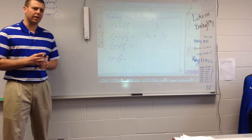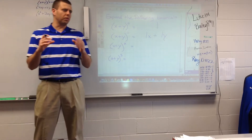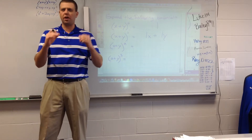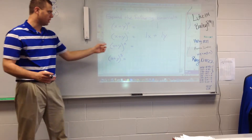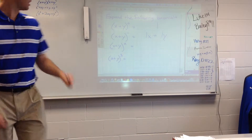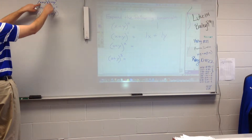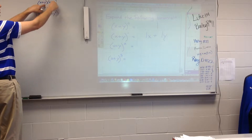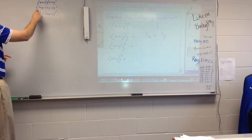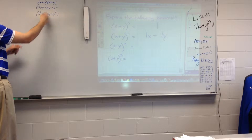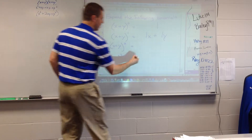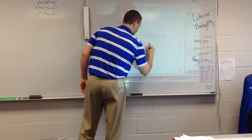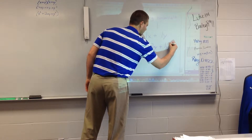x plus y squared — when you square a binomial, you take x plus y times another x plus y, so you have to FOIL it out. You get x squared plus xy plus xy plus y squared, which simplifies to x squared plus 2xy plus y squared. I'll write that as 1x squared plus 2xy plus 1y squared.